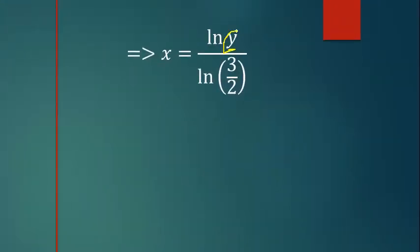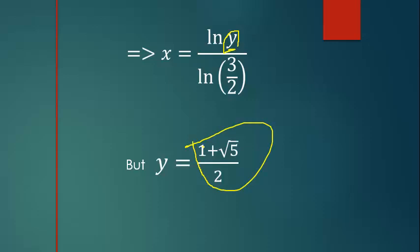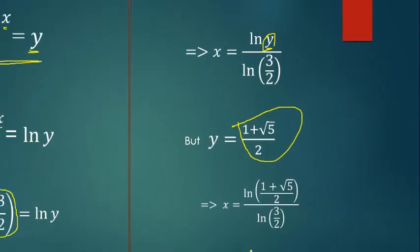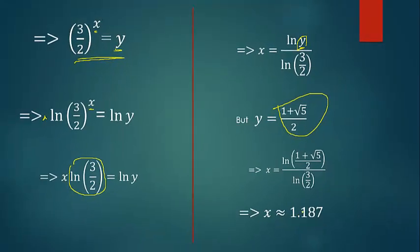We substitute y = (1 + √5)/2. We compute this value and it gives us 1.187. That's our answer: 1.187. Thank you for watching.